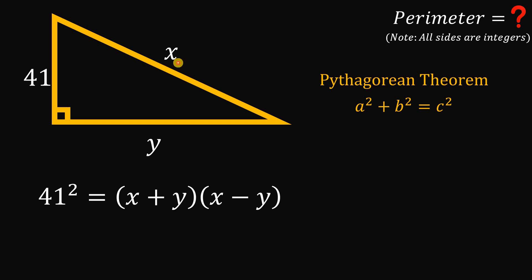Take note that x and y are both integers, therefore the product of (x + y) and (x - y) must be an integer also. So x + y is an integer and x - y is also an integer. Now 41² equals 1681, and take note that 41 is a prime number.